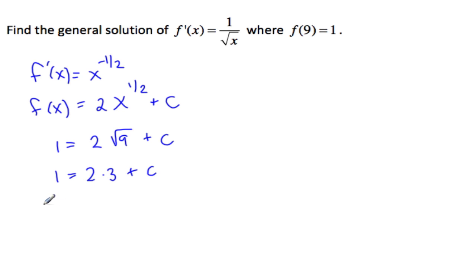1 minus 6 is minus 5, must be c. So c must be minus 5 in order for this function f of x to go through 9, 1.